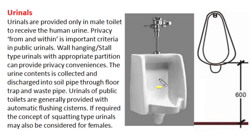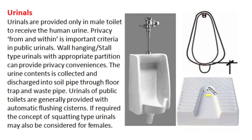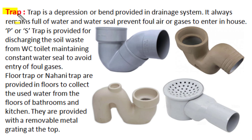Urinals are provided only in male toilets to receive human urine. Privacy is a very important criterion, especially in public urinals. Wall-hanging type or stall-type urinals with appropriate partitions are provided for privacy and convenience. The height of the urinal is kept at 60 cm from the finished floor level. Urine collected is discharged into the soil pipe through a floor trap and waste pipe. Public toilets generally have automatic flushing systems. In women's institutes, squatting-type urinals may also be considered.